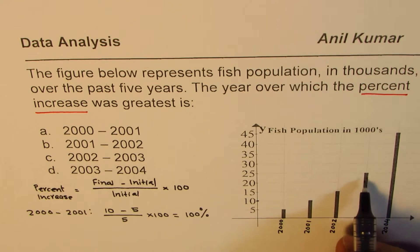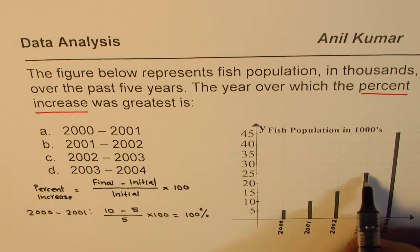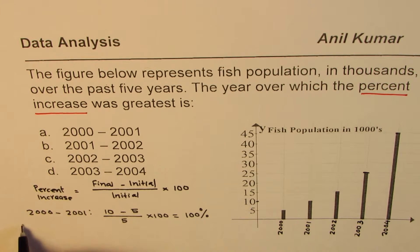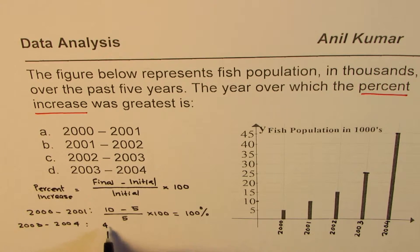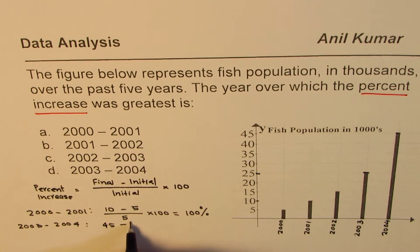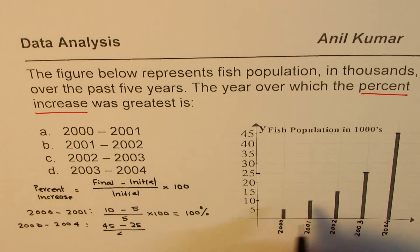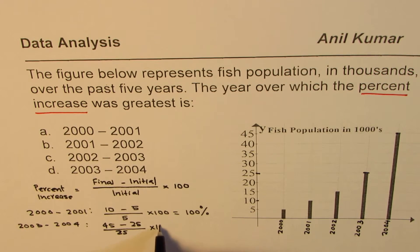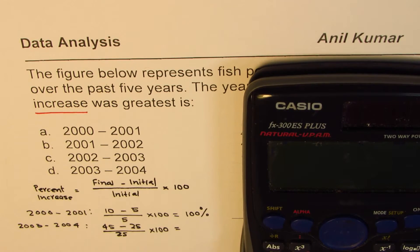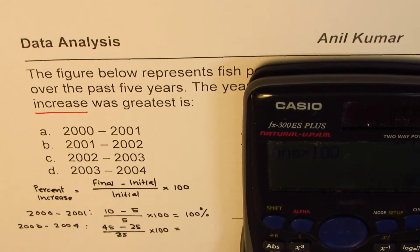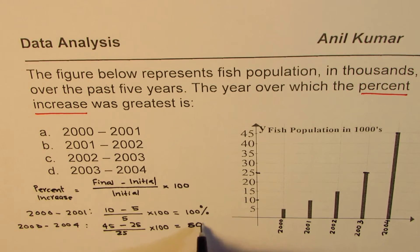Now I'm more interested in doing the last one — from 2003 to 2004. The final value is 45, minus the initial value of 25, divided by 25, times 100. 45 minus 25 is 20. When you divide 20 by 25, you get less than 1 — which equals 4 over 5 — and times 100 gives you less than 100, which is 80%. So what you get here is 80%.